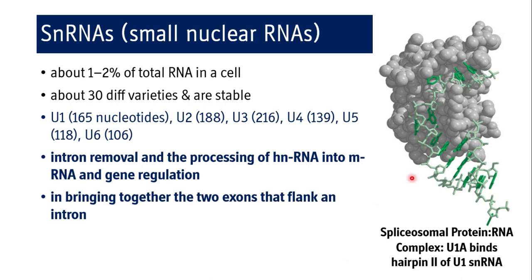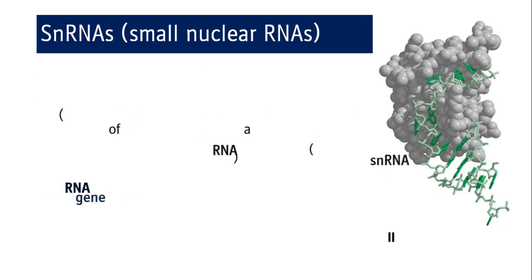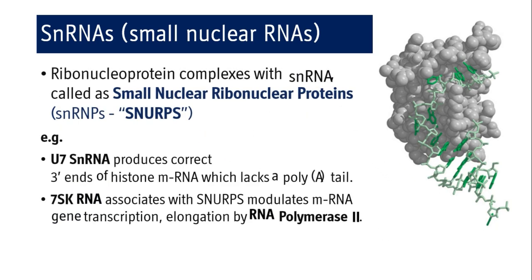This is the structure of spliceosomal protein — the RNA complex — where U1 is binding hairpin 2 of U1 snRNA. Ribonucleoprotein complexes with snRNA are called small nuclear ribonuclear proteins, abbreviated as SNRPs.